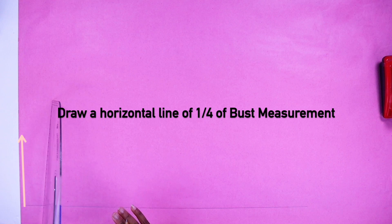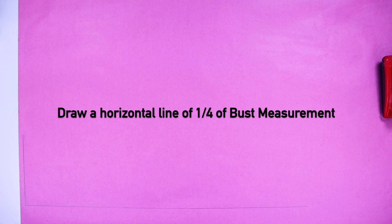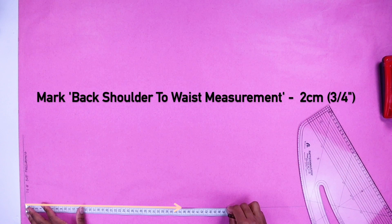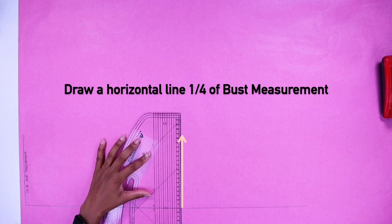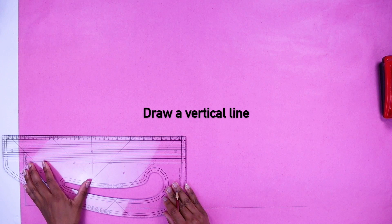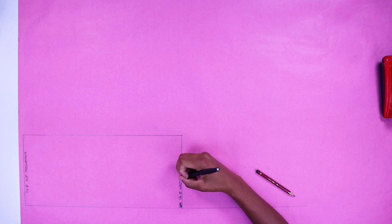Draw a vertical line. Draw a horizontal line of one quarter of your bust measurement. Mark your shoulder to waist measurement minus two centimeters. Mark one quarter of your waist measurement. Now draw a vertical line connecting with that line we did earlier. So we're going to measure our waist measurement here. Mark one quarter of your waist measurement.